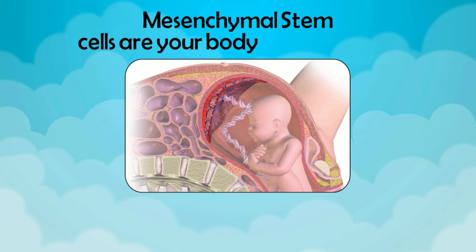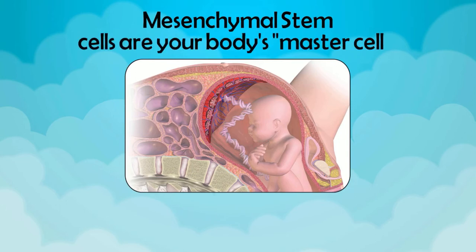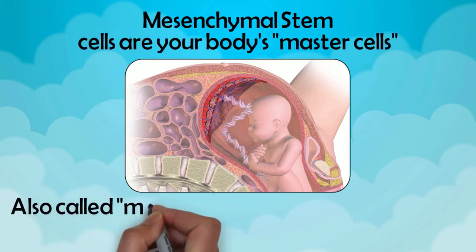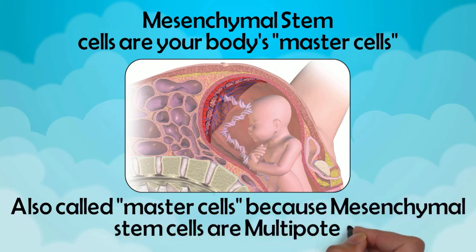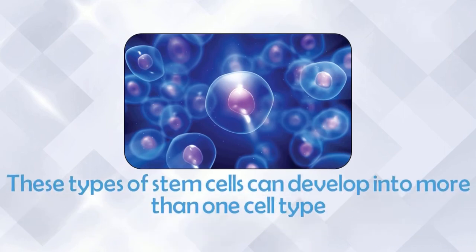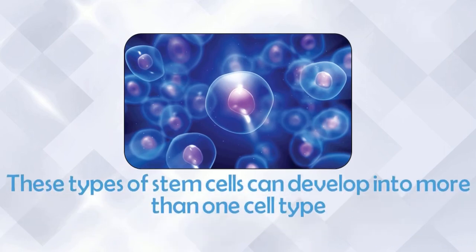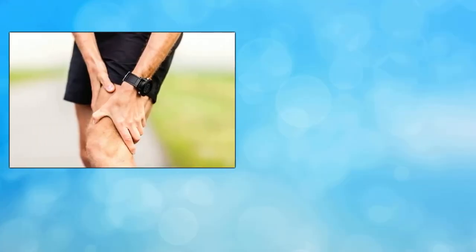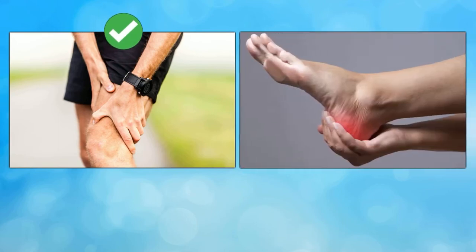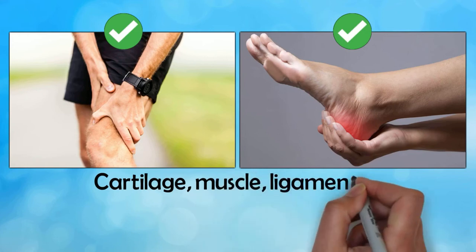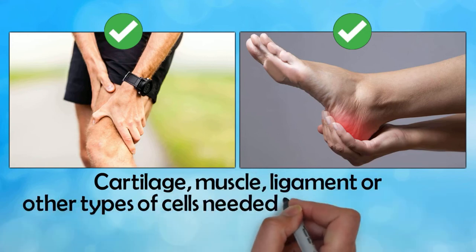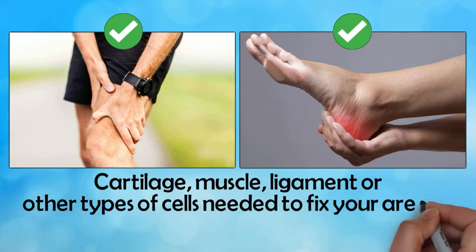Mesenchymal stem cells are your body's master cells. The reason why they are sometimes called master cells is because mesenchymal stem cells are multipotent. What multipotent means is that these types of stem cells can develop into more than one cell type. So if you have a joint problem, they can become joint cells and fix your joint. If you have a tendon problem, they can become tendon cells and fix your tendon, as well as cartilage, muscle, ligament, or other types of cells needed to fix your area of pain or injury.